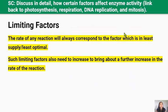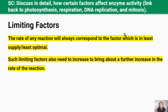The rate of any enzyme reaction will always correspond to the factor which is in least supply. Even if there's plenty of substrate, other factors like enzyme concentration, temperature, pH, and others could become limiting factors, and those limiting factors also need to increase to bring about further increase in the rate of reaction. There's no point having the optimal temperature if you don't have enough enzyme or if the pH is wrong. A question about limiting factors comes up every year, usually in the context of photosynthesis and respiration.